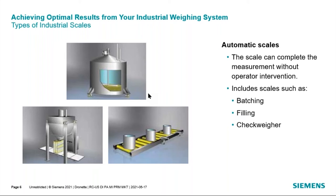With both batching systems and filling machines, they have two objectives: fill as rapidly as possible and hit the set point as precisely as possible. The way they do this is with multiple fill streams — a coarse fill stream and a fine fill stream. The scale electronics switch between coarse and fine. It starts out filling very rapidly and then when you get to say 90% of the desired amount, it switches to the slower fill stream to hit the set point as precisely as possible.